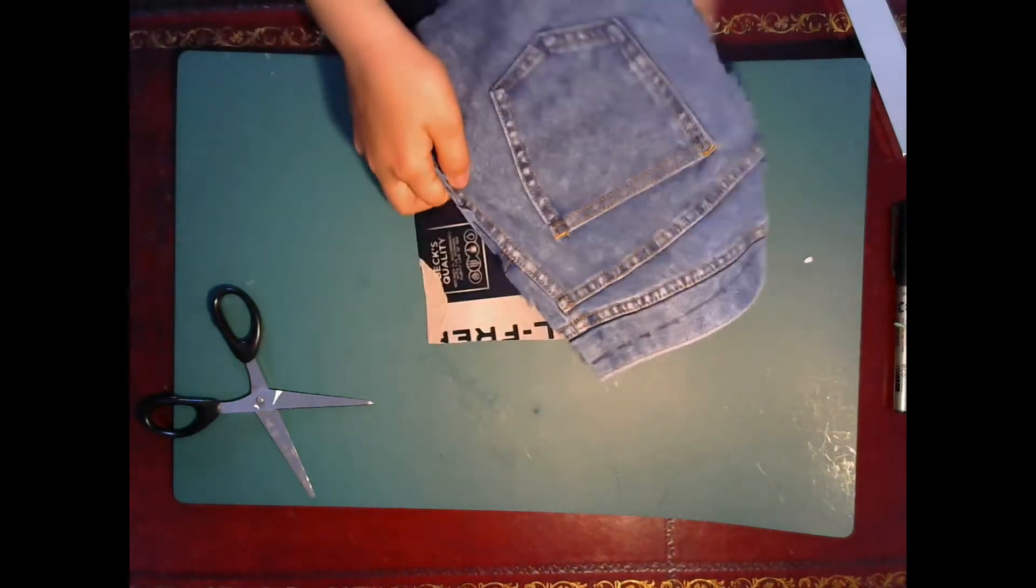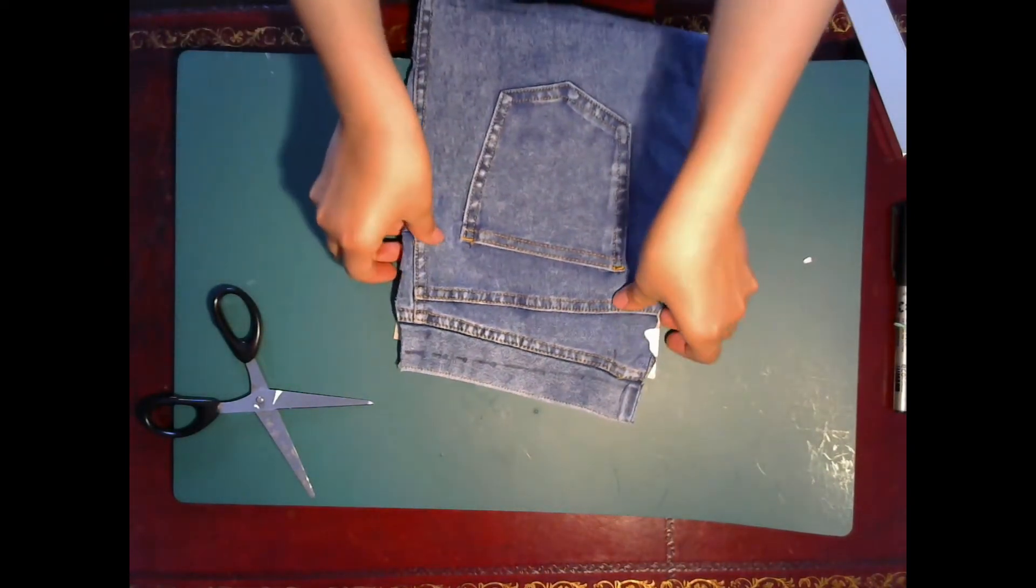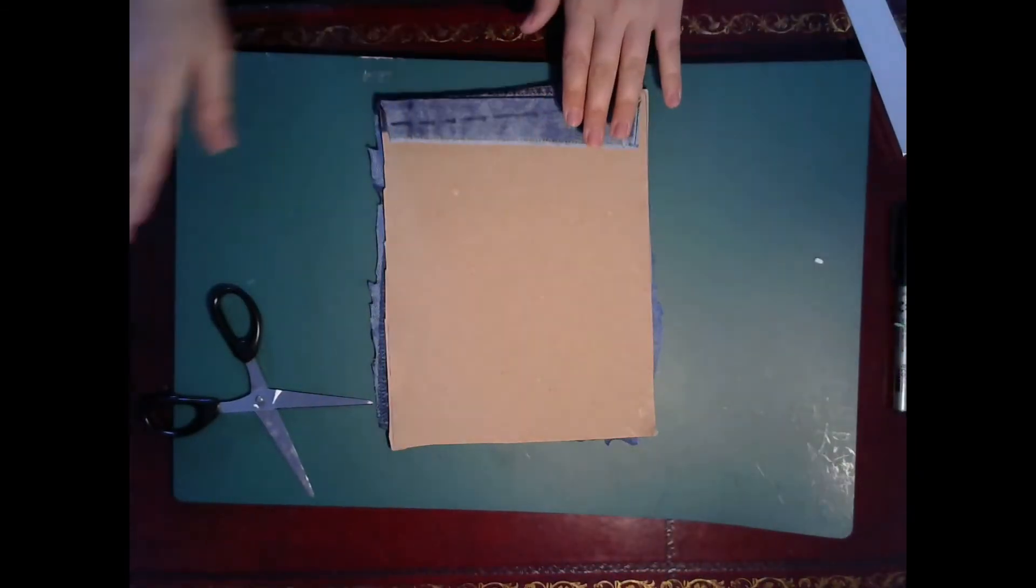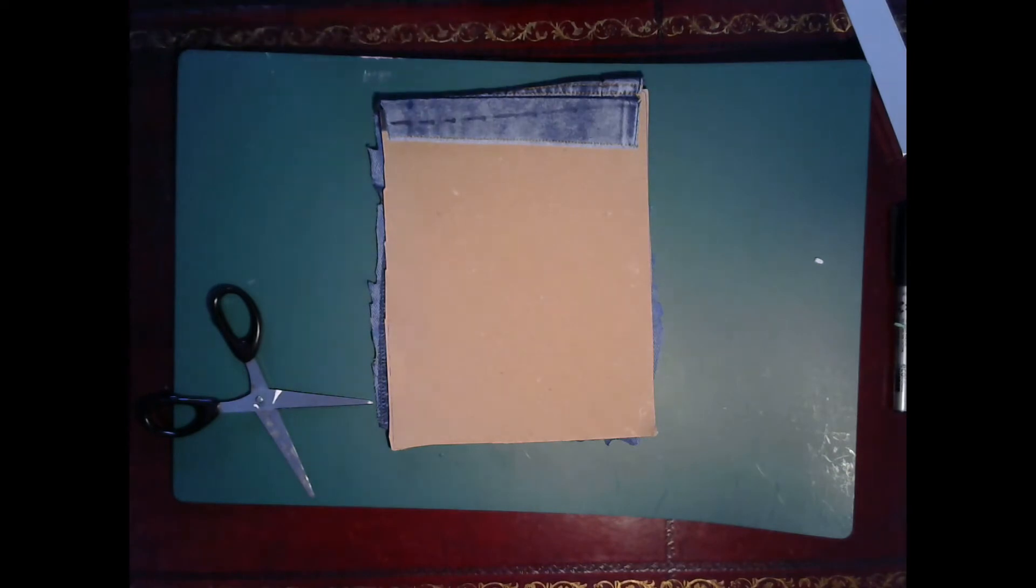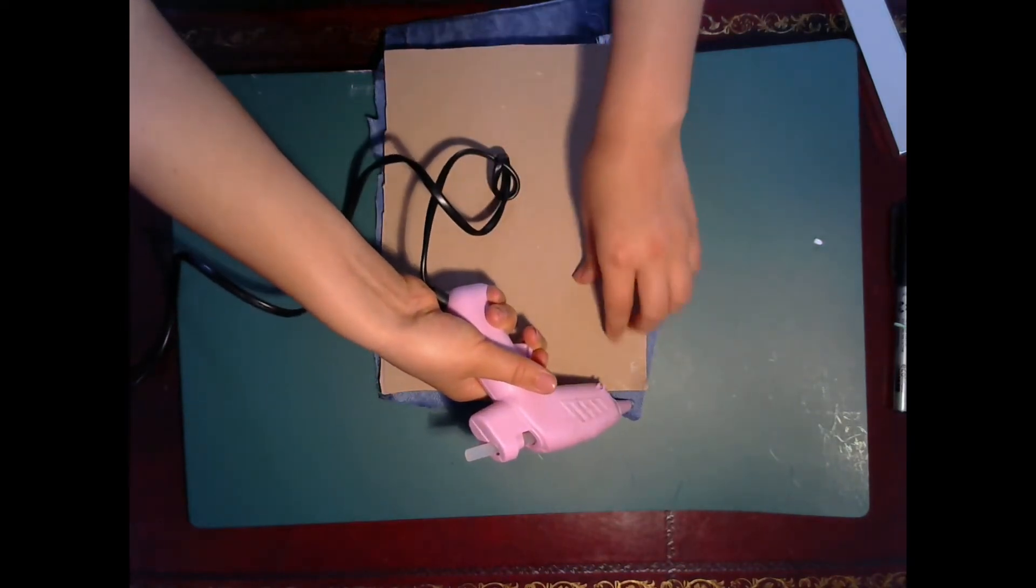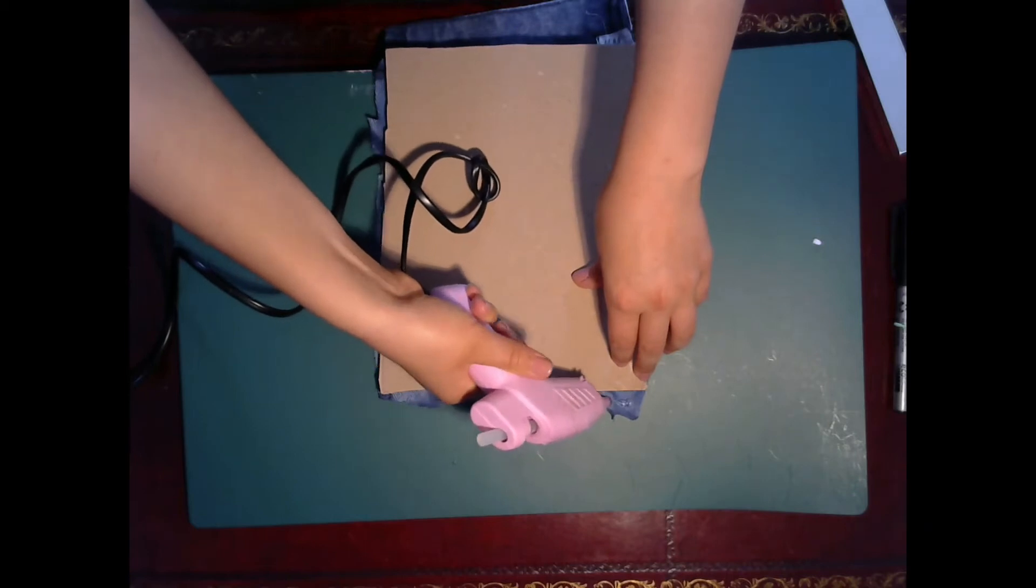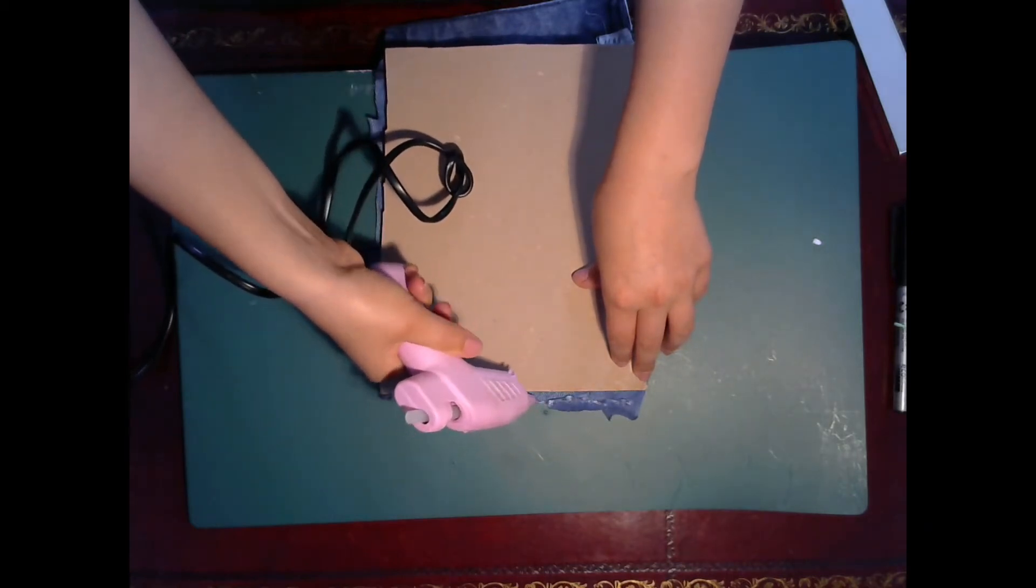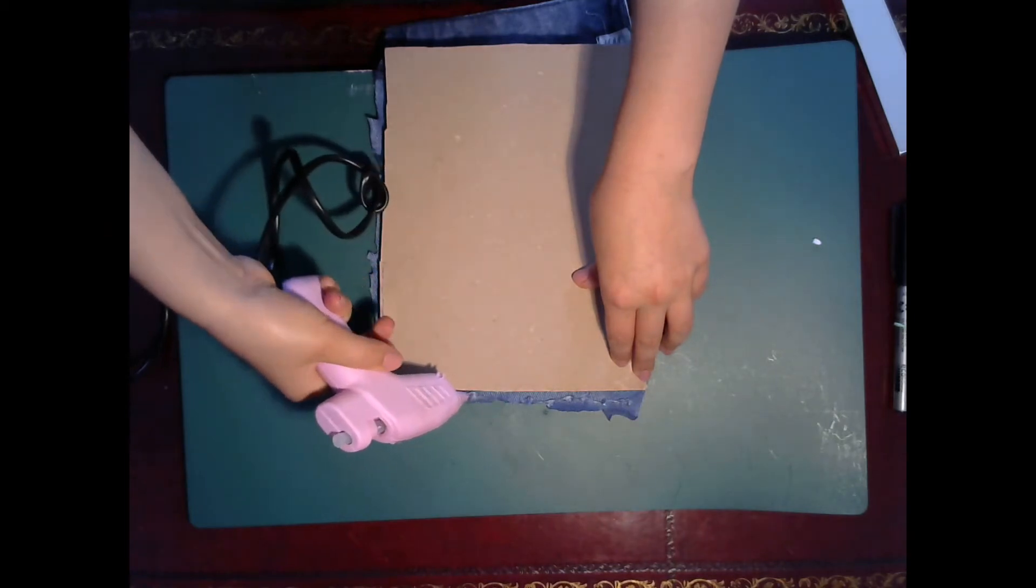And then you can turn it over and stick this down with your hot glue gun. First I have to actually let it heat up. So now that my glue gun has heated up I can start gluing this on, making sure I go quickly before the glue dries otherwise it's really not gonna work.